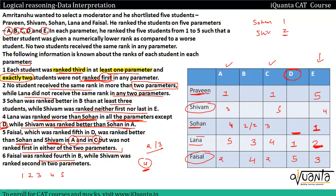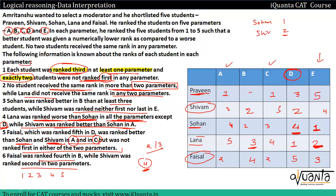Shivam was ranked second in two parameters, so two and two are placed in Shivam's row. Praveen needs rank three at least once; since three is already filled elsewhere, the only possibility is to place three for Praveen in the available cell. Then four follows. Rank one cannot appear in a third cell for the same student due to the 'no more than two same ranks' rule, so rank one is placed in the correct position. The remaining cell gets rank five, completing our table.